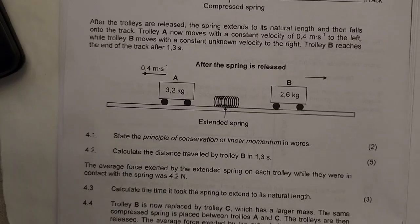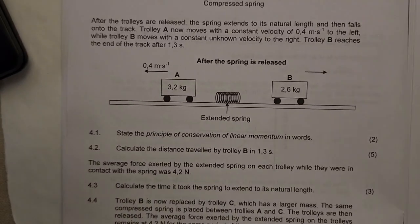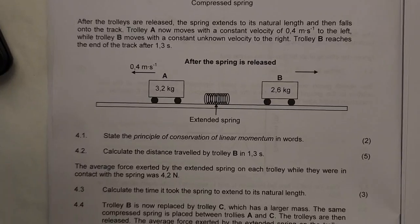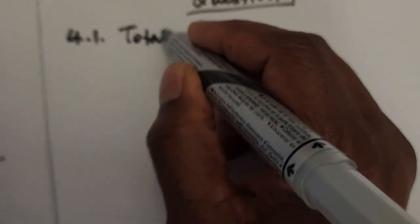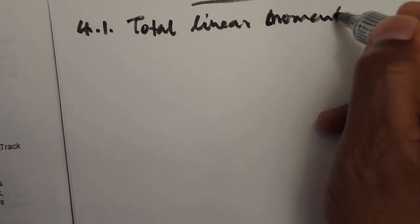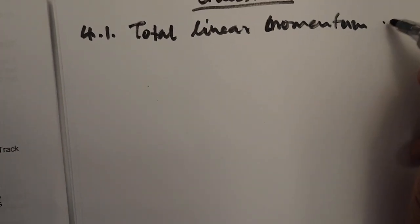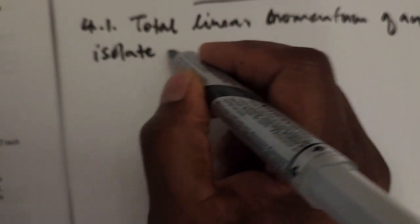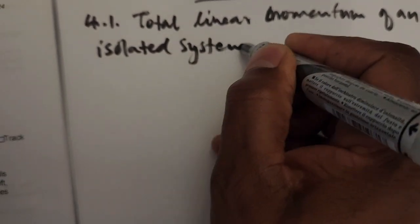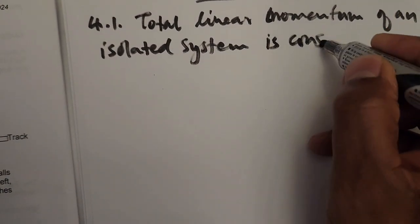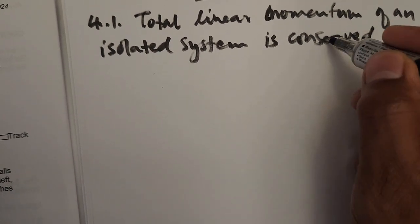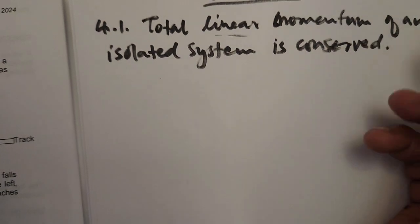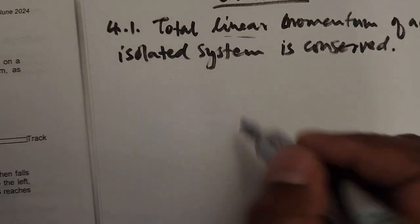The first question asks us to state the principle of conservation of linear momentum. The total linear momentum of an isolated system is constant. Remember, if we were defining the principle of conservation of mechanical energy, we would just replace 'linear momentum' with 'mechanical energy' — the total mechanical energy of an isolated system is constant. That's how the two definitions are similar.